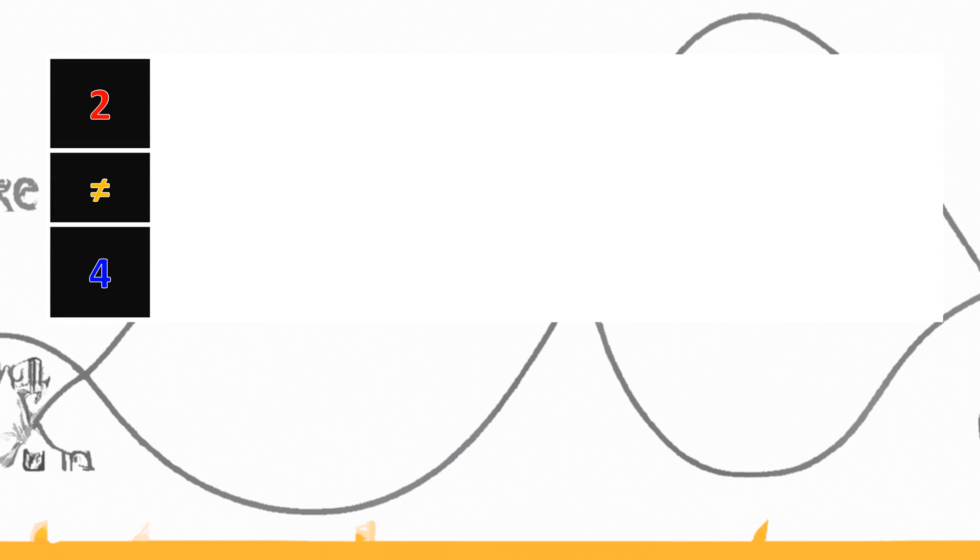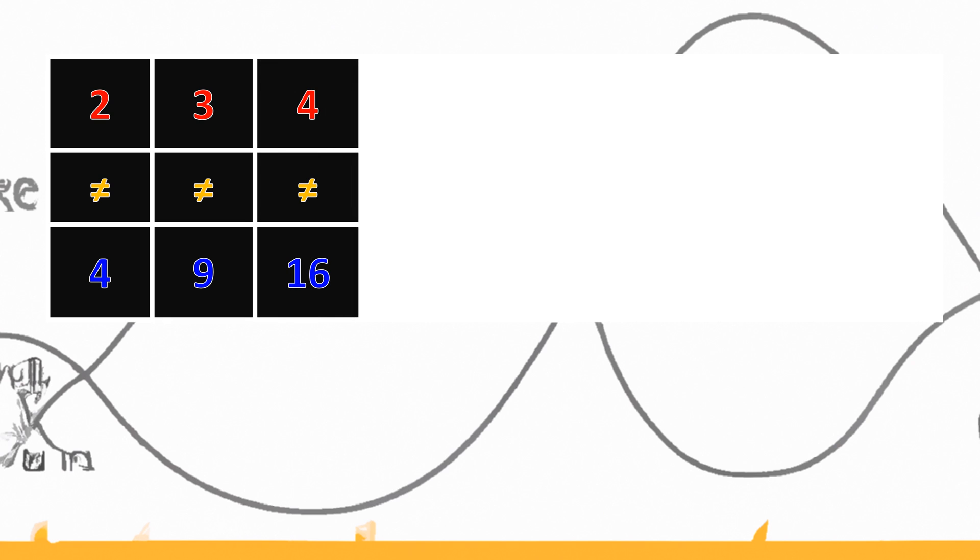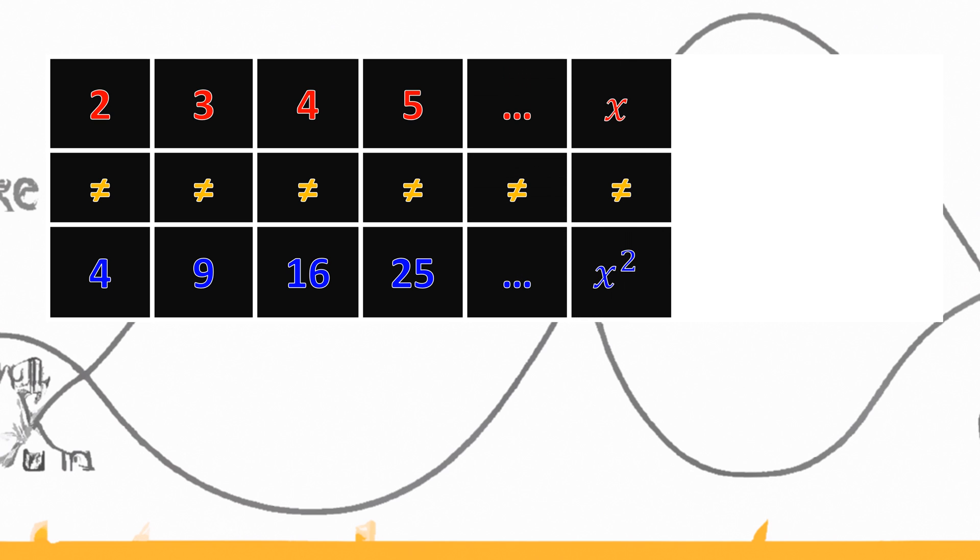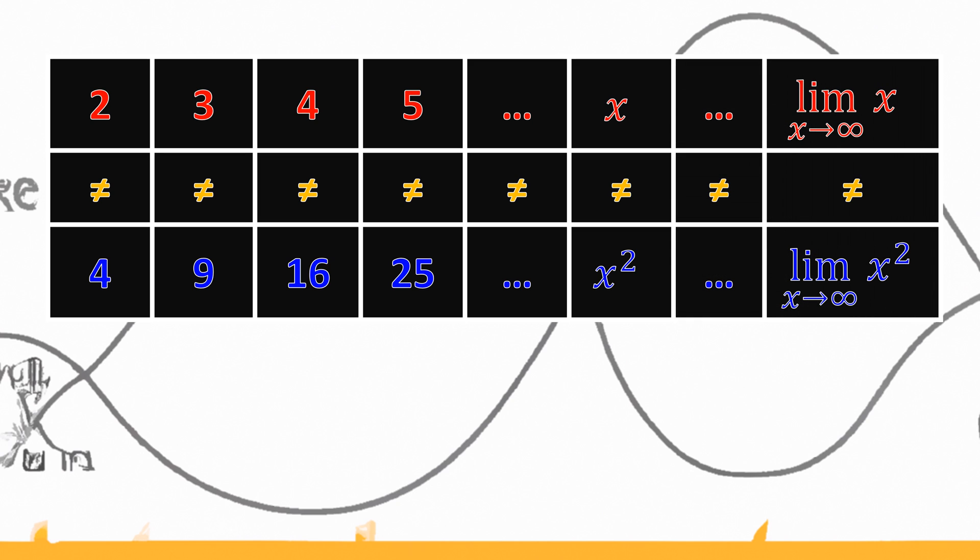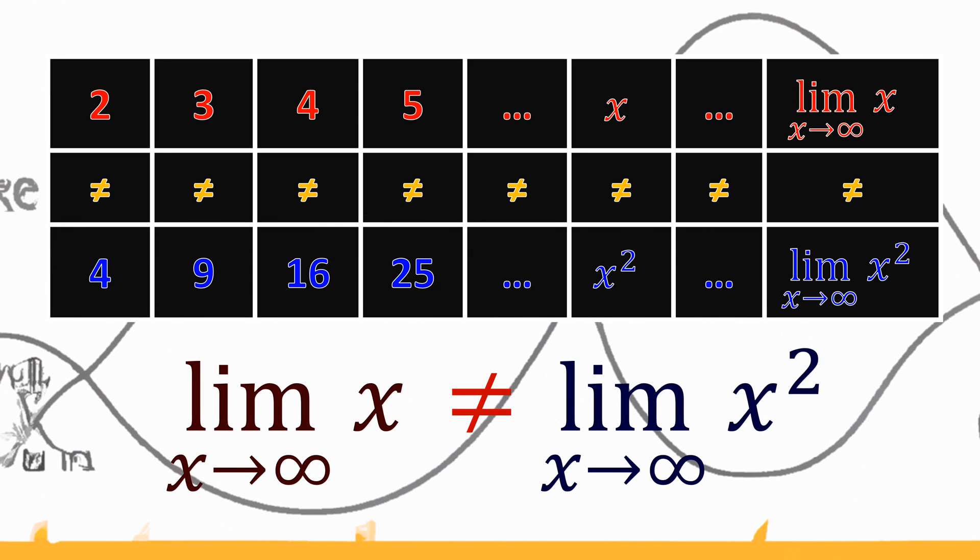2 is not equal to 4, 3 is not equal to 9, 4 is not equal to 16, 5 is not equal to 25, and we don't expect any x to become equal to x² in this series. Therefore, we can say that these values are not equal. So it doesn't make sense to assume infinity is equal to infinity.